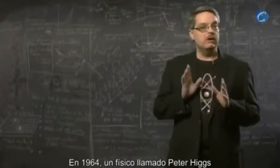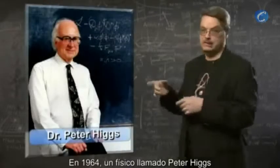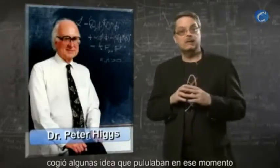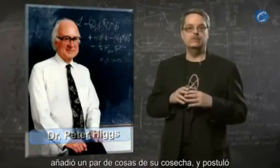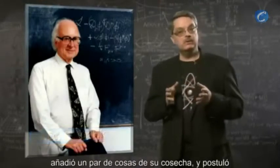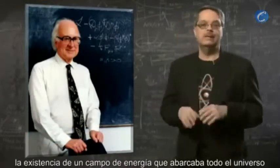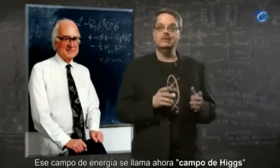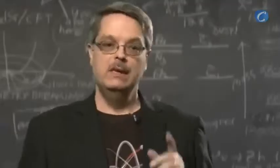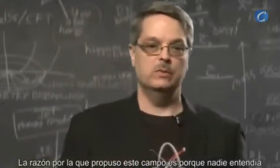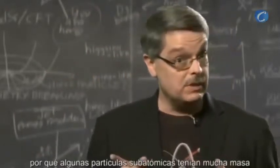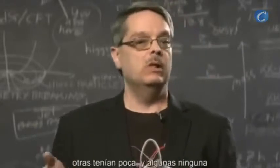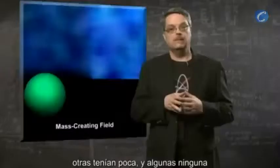In 1964, a physicist by the name of Peter Higgs took some ideas that were floating around at the time, added an insight or two of his own, and proposed that there was an energy field that permeated the entire universe. This energy field is now called the Higgs field. The reason he proposed this field was that nobody understood why some subatomic particles had a great deal of mass, while others had little and some had none at all.